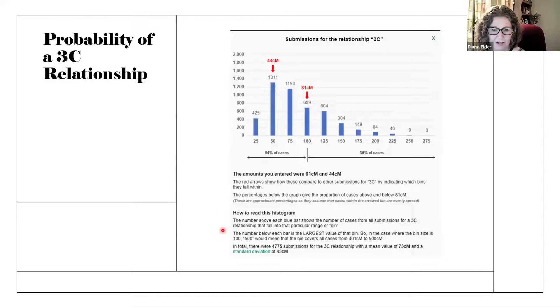Something that we can also look at down here is we can see how many there were total. And we can see there were 4,775 submissions. This is a lot of submissions for third cousin relationships. So this gives us pretty good data. We can see it has a mean value of 73 centimorgans, which would be kind of right here in the middle or closer to the 75 bin. And a standard deviation of 43 centimorgans. So we could add 43 centimorgans to 75. And we would see that this absolutely, this 81 is within one standard deviation from the mean. And this one here is pretty close to one standard deviation from the mean as well. So this is a pretty good possible for these two people who share to the mystery match.